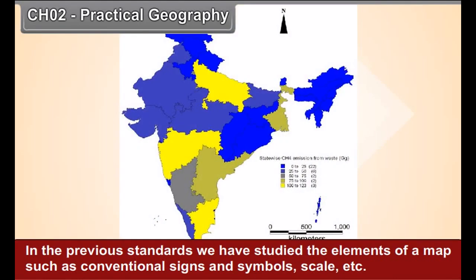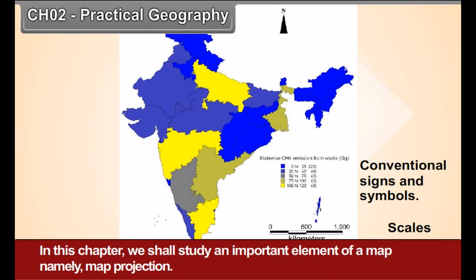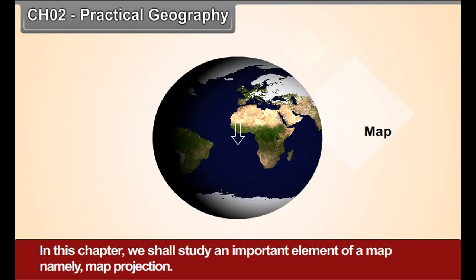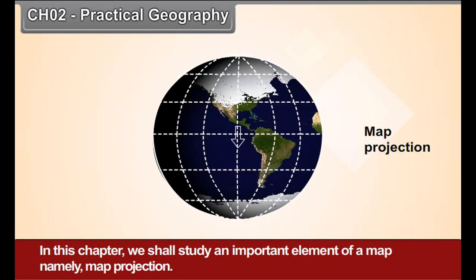Chapter 2: Practical Geography. In the previous standards, we have studied the elements of a map such as conventional signs and symbols, scale, etc. In this chapter, we shall study an important element of a map, namely map projection.